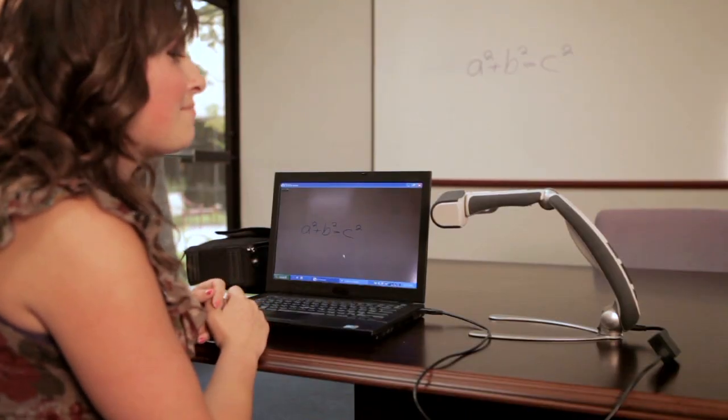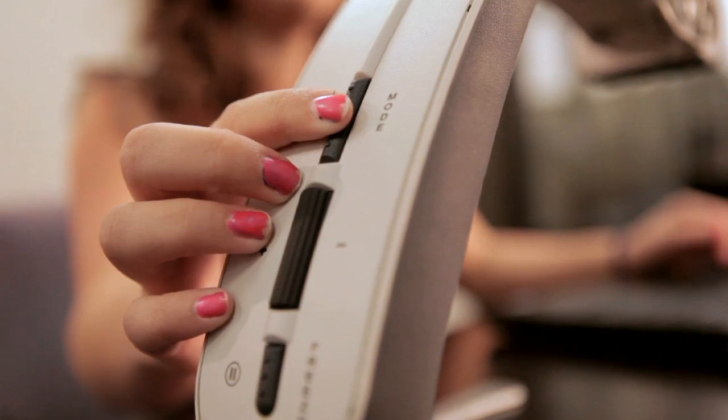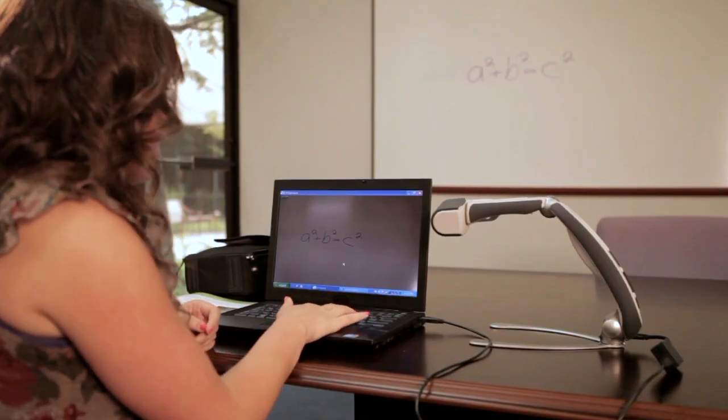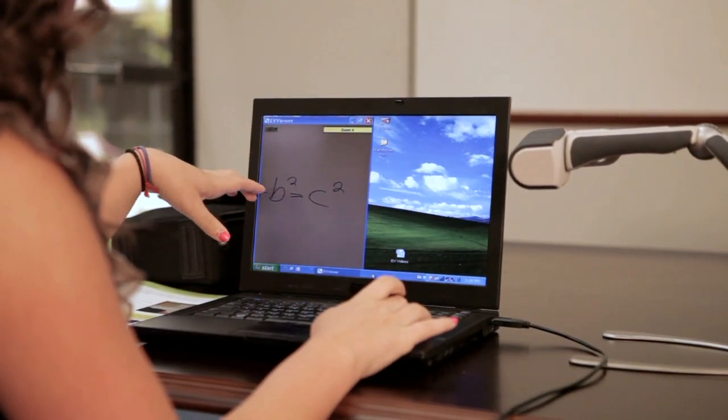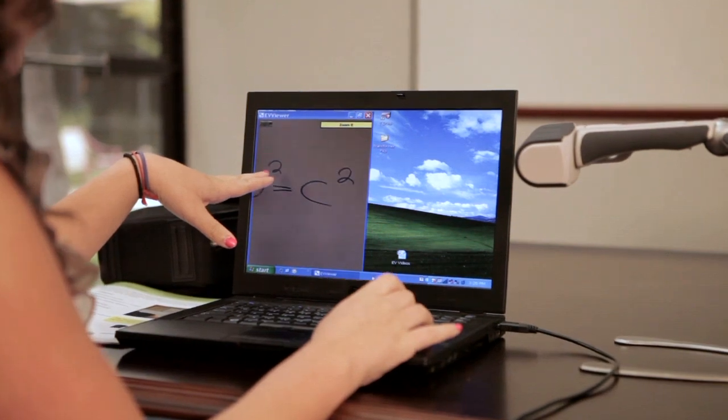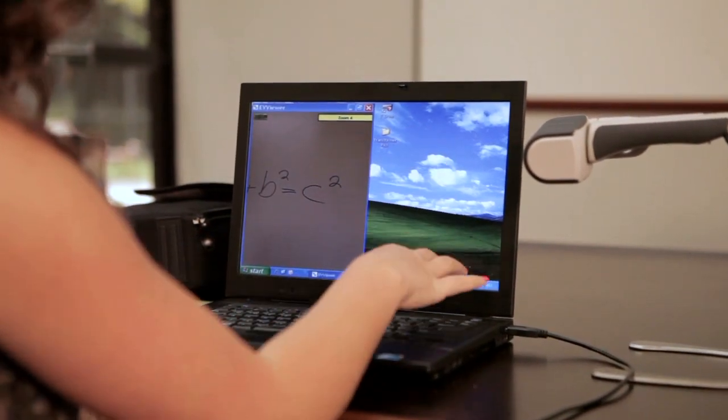Also, you can change the mode either along the side of the Transformer or by pressing M, depending on what contrast works better for you. So by pressing F8, it splits the screen. So if you wanted to be using the Transformer while on a word processor or while looking something up on the internet, it makes it totally accessible.